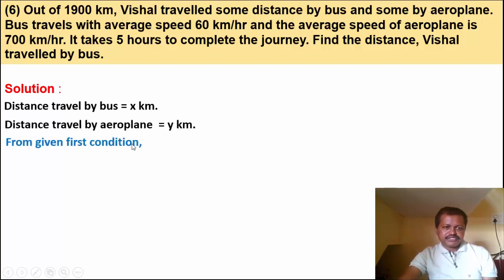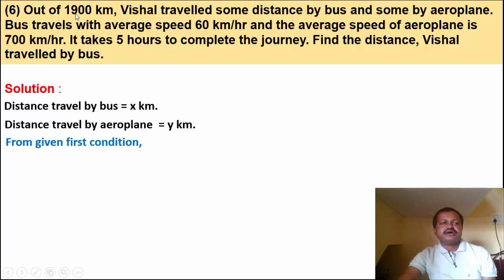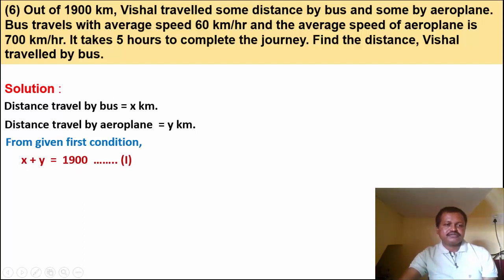From the first condition: total distance is 1900 km. Distance by bus plus distance by aeroplane equals total distance. So x plus y is equal to 1900. This is equation number 1.